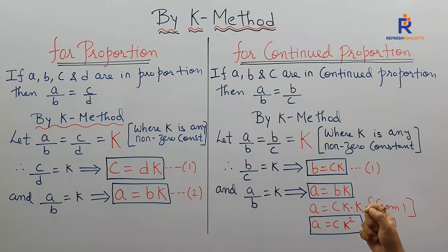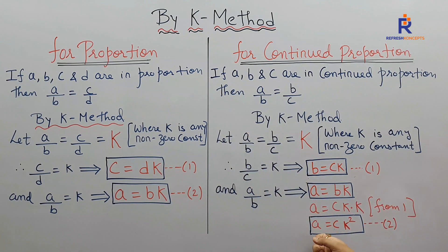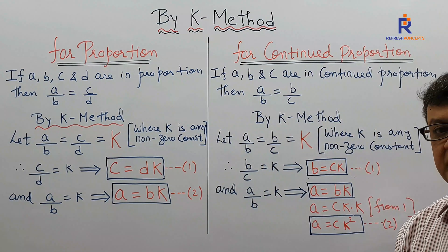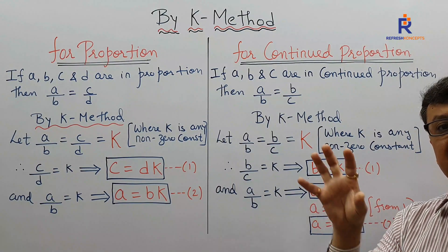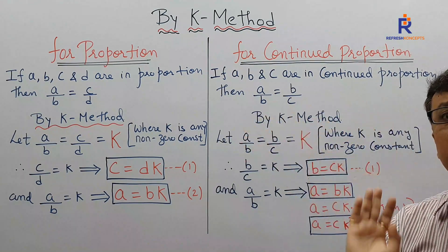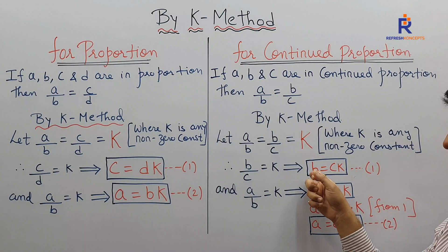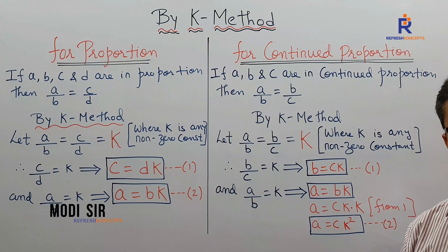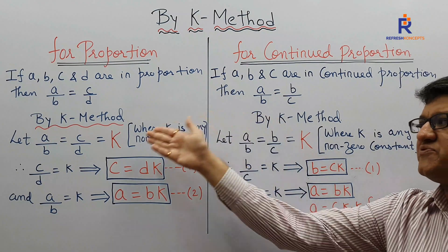Substituting the value of B, which is CK: A equals CK². That is equation number two. There is no replacement for C — C will be written as C only. So for continued proportion proof sums: A is replaced by CK², B is replaced by CK, and C stays as C.